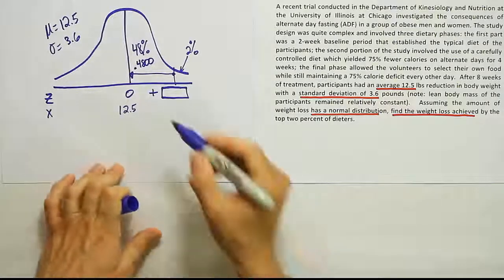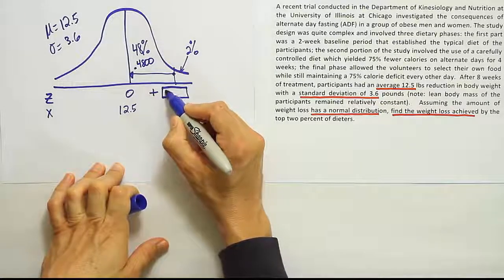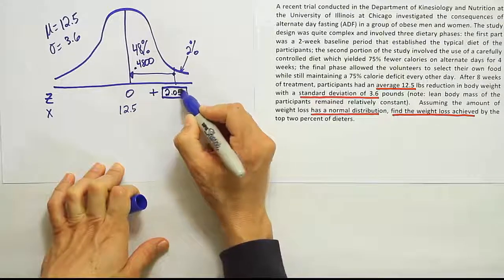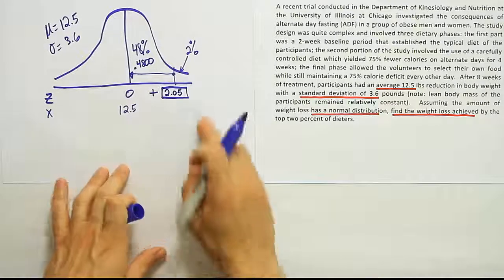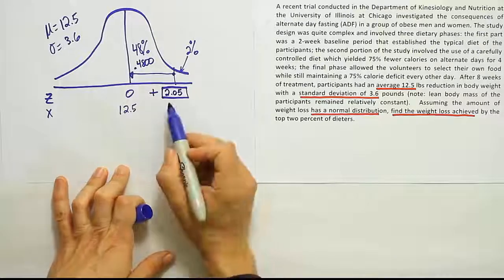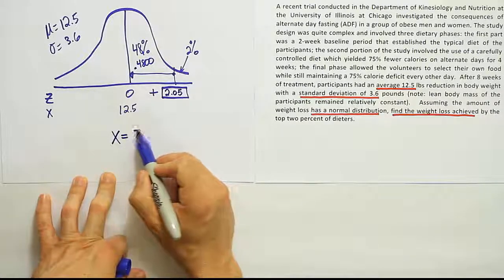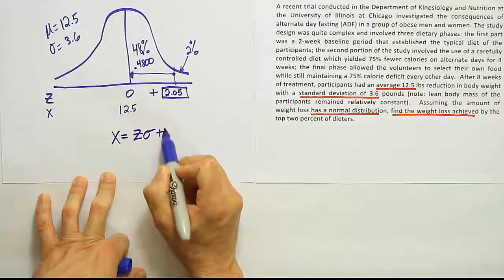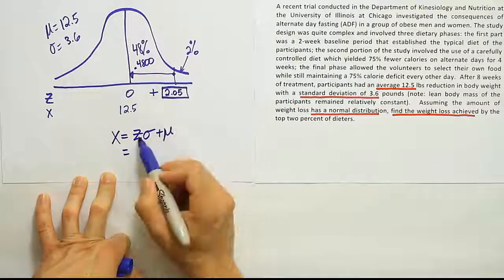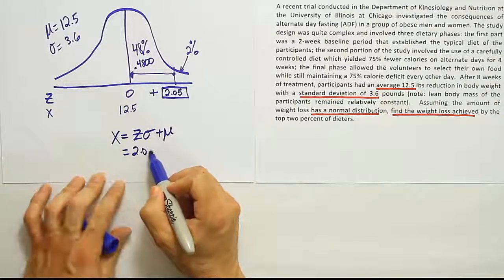Okay, so I've gone to the table, I've looked up my 0.4800, and I found that the answer is 2.05. That is the closest z-score that's associated to that area. Now, once I have that z-score, the rest is a breeze. I just use the following formula, x is equal to z times sigma plus the mean. I plug in the z-score I just found, 2.05.